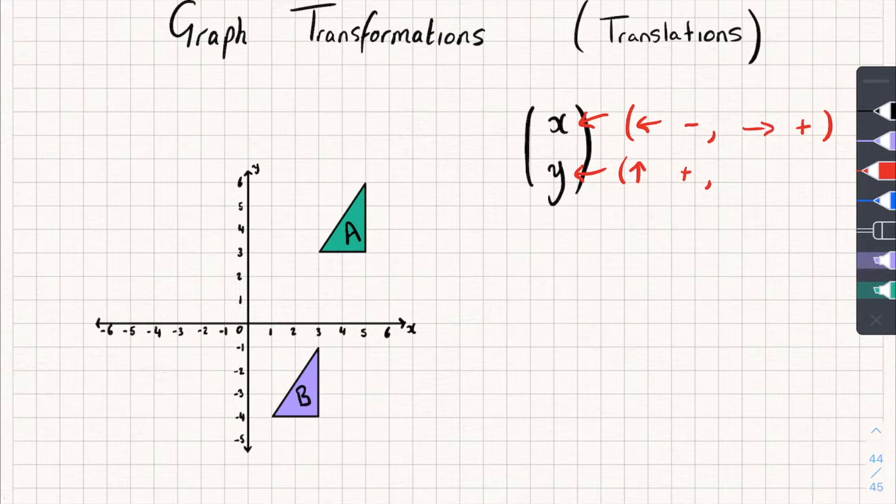If it's moved down, it's a negative. And so if it had moved down three squares, we'd write negative three. And that's pretty much it. So let's have a look at this example here.